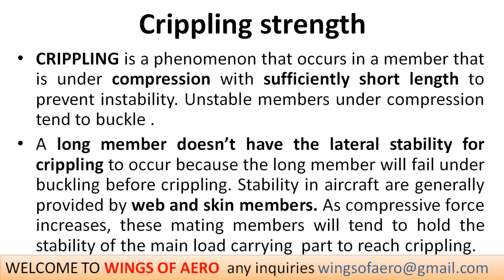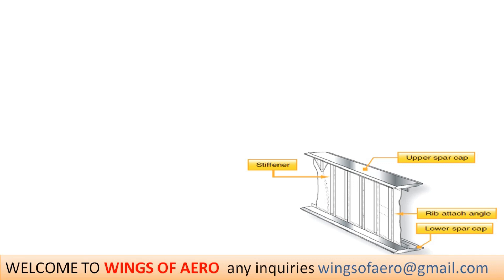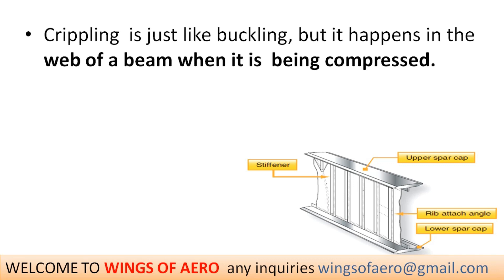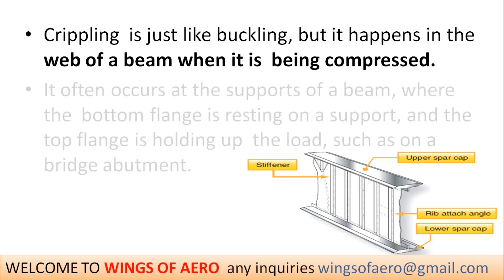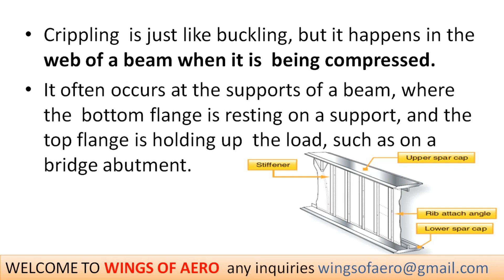Stability in an aircraft is generally provided by webs and skin members. As the compressive force increases, these members tend to hold the stability of the main load-carrying parts and lead to crippling. Crippling is just like buckling, but it happens in the web of a beam when it is compressed. It occurs at the support of the beam where the bottom flange rests on the support and the top holds up the load.